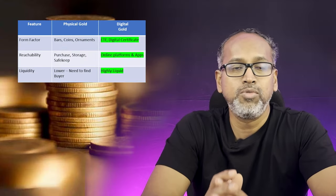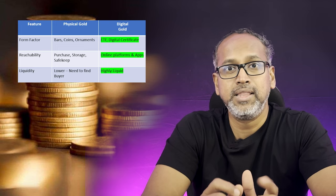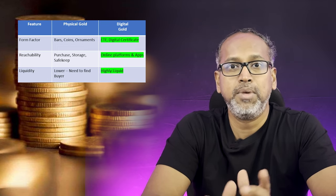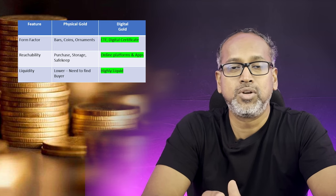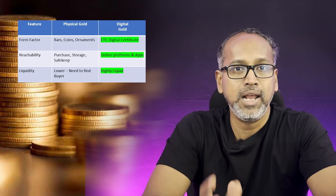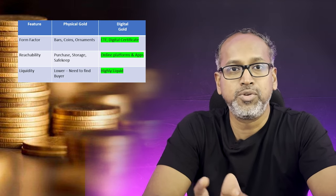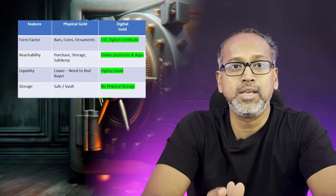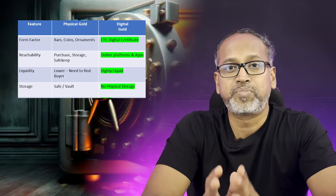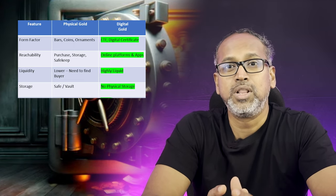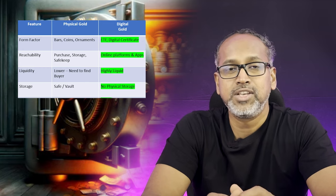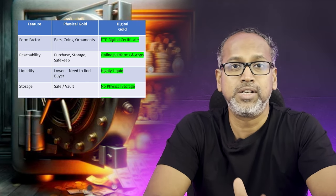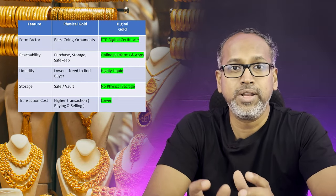On liquidity: physical gold is relatively low liquidity because you need to find an actual buyer, go to gold shops, and many shops don't pay instant cash — they ask you to replace it with equivalent ornaments. Digital gold is highly liquid — you can sell online instantly and the funds are credited to your wallet immediately. On storage: physical gold is difficult to store due to theft risks, requiring a vault or safe, whereas digital gold requires no physical storage at all.